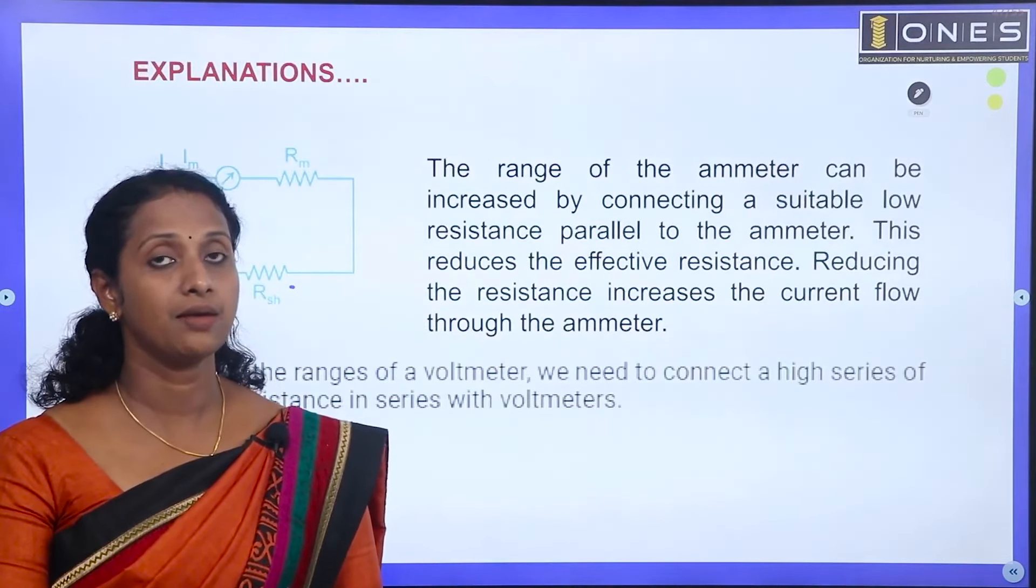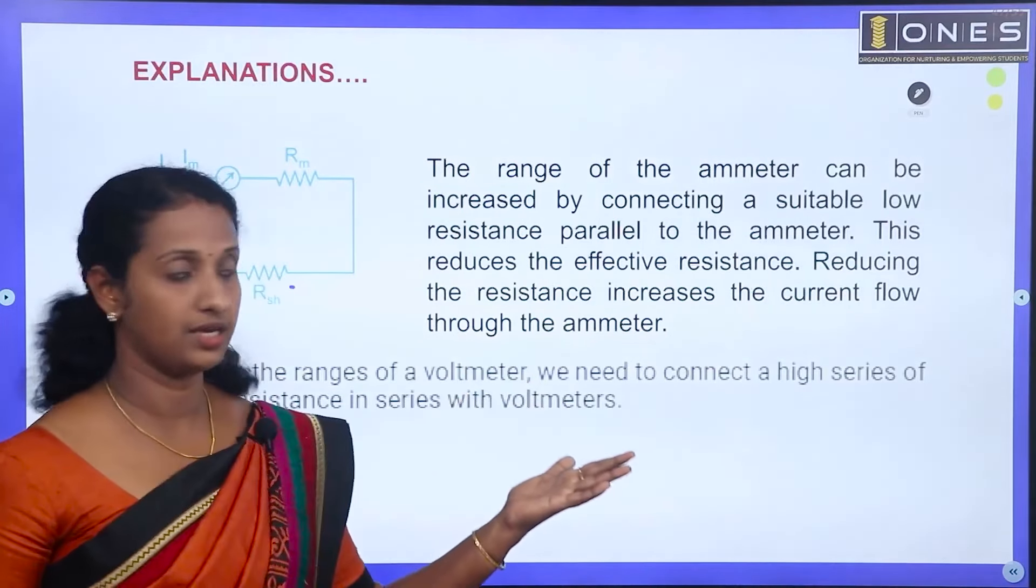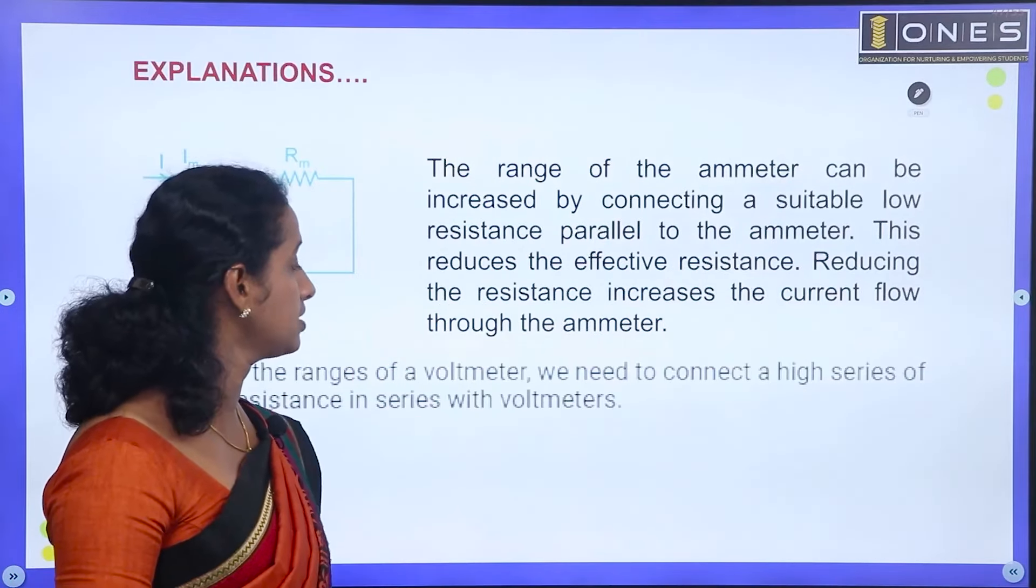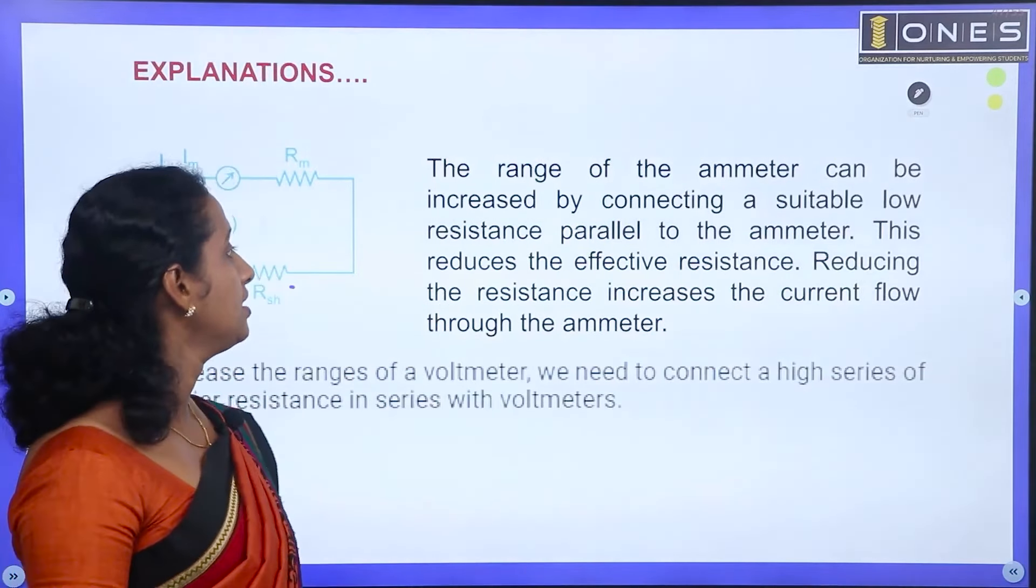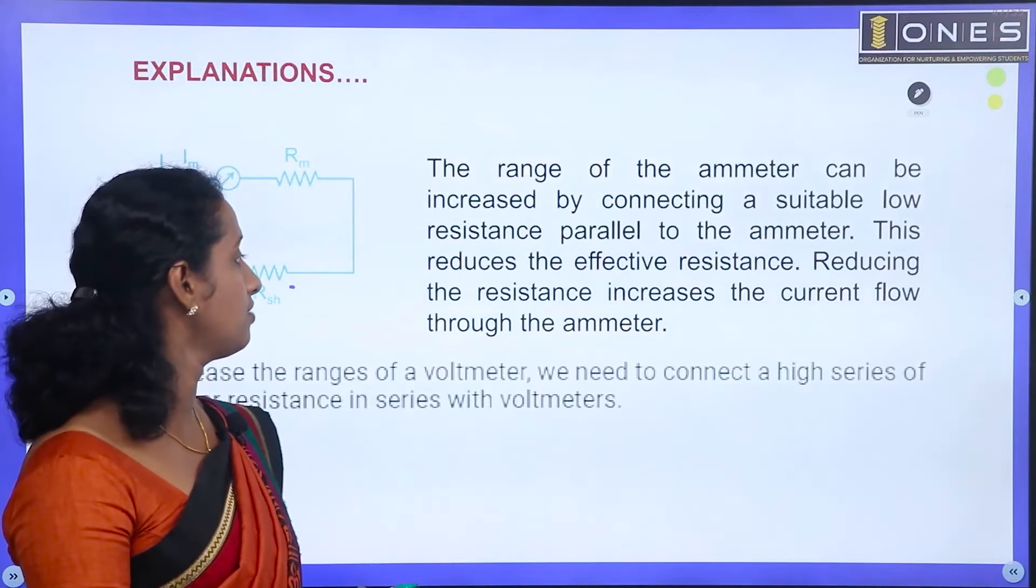We can increase the range of the current. The range of the ammeter can be increased by connecting a suitable low resistance parallel to the ammeter. This reduces the effective resistance. Reducing the resistance increases the current flow through the ammeter.